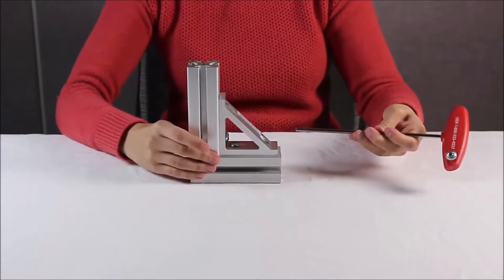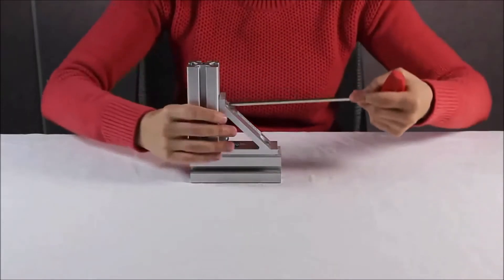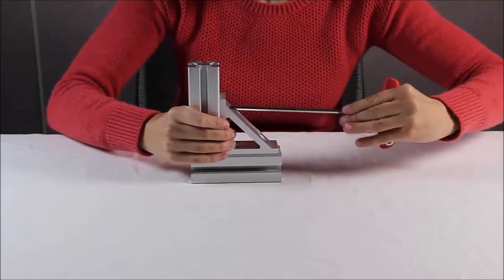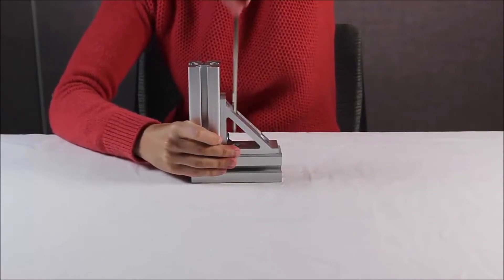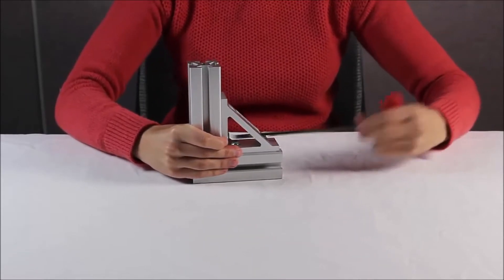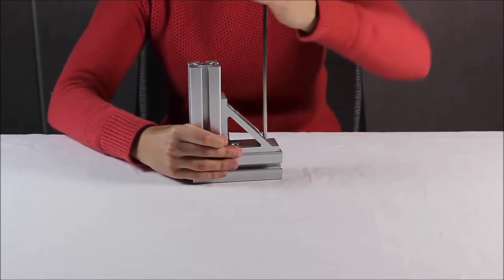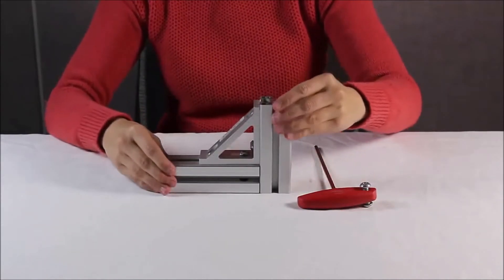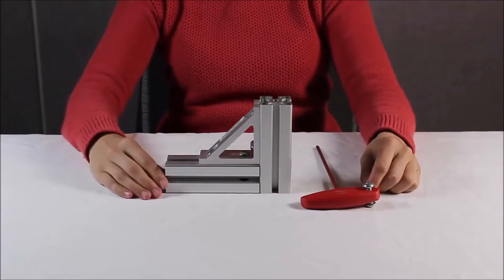Now that we've got everything loosely secured, we're going to tighten everything down. And that's how we create a 90 degree connection using the gusset bracket.